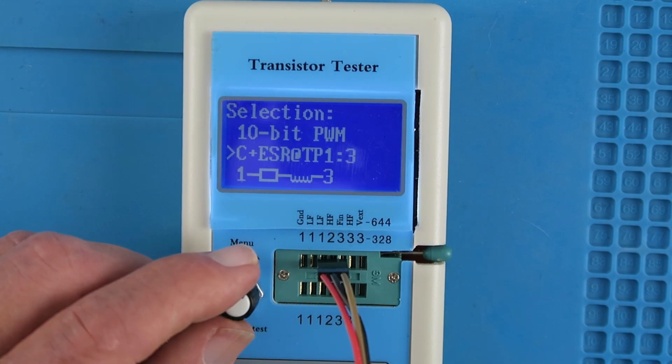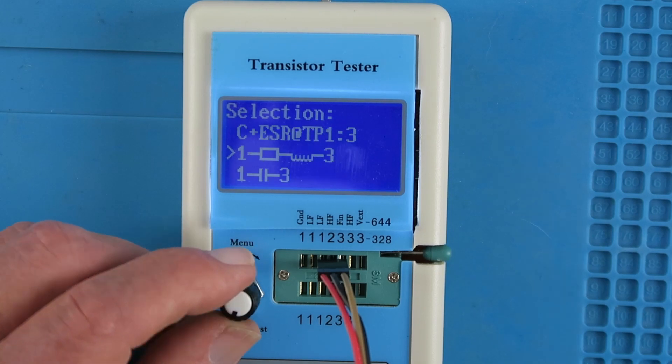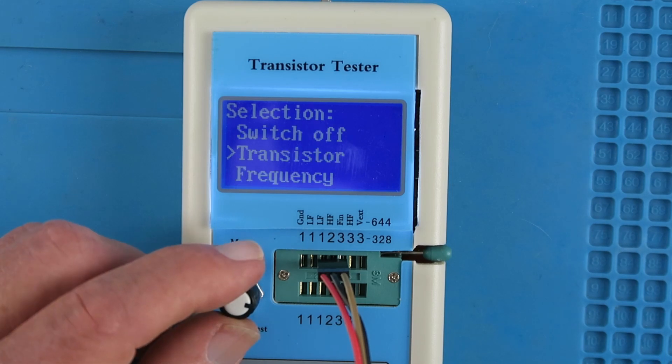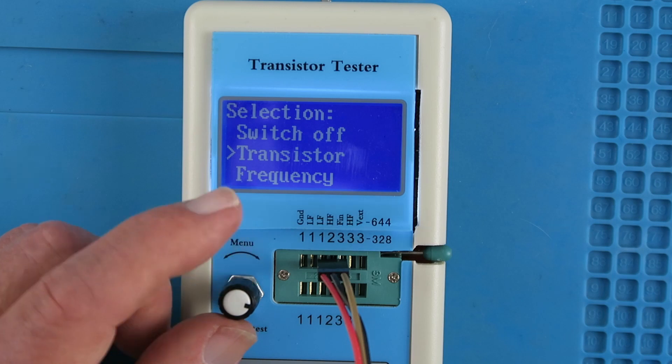If we wish to test capacitors and include the ESR measurement, then we have this menu option here, again between pins 1 and 3. This menu option is for measuring resistance and additionally the inductance of the resistor as well, again between pins 1 and 3. The transistor is fairly self-explanatory. It sets the tester into transistor-only mode.